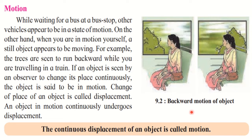For example, if we say the bus covered one kilometer in five minutes, distance is given but no direction is mentioned. But suppose you are standing at one point and I instruct you to move 10 feet — you would wonder whether to move left, right, forward, or backward. If I say move 10 feet in the east, you immediately start moving east. That is the basic difference between distance and displacement.